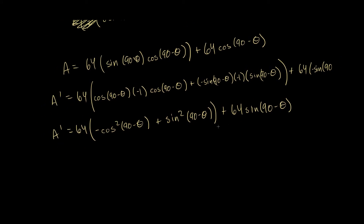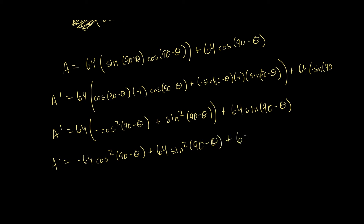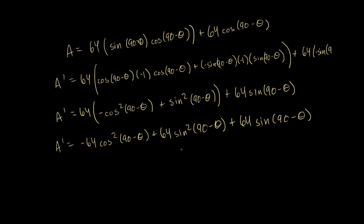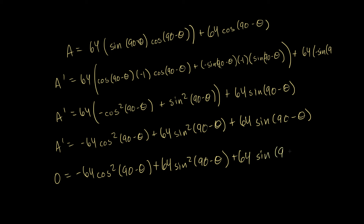Distributing the 64, A prime equals negative 64 cosine squared(90 minus theta), plus 64 sine squared(90 minus theta), plus 64 sine(90 minus theta). This is pretty difficult to calculate as is. Remember that when we're trying to find where our derivative is at a maximum, we always want to find where the derivative equals zero. So I'm going to set this equal to zero: 0 equals negative 64 cosine squared(90 minus theta) plus 64 sine squared(90 minus theta) plus 64 sine(90 minus theta).